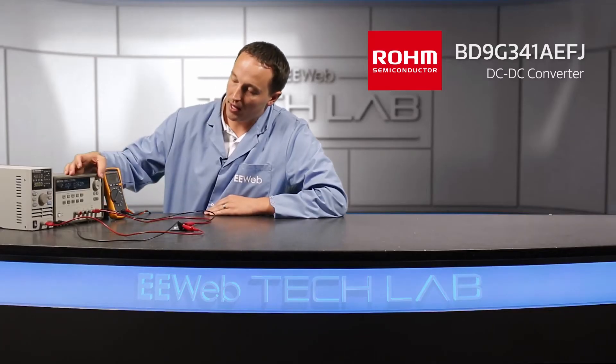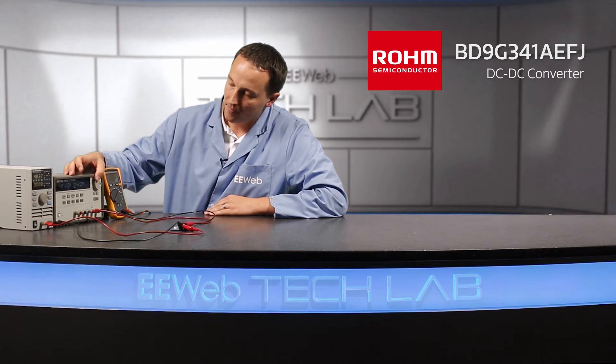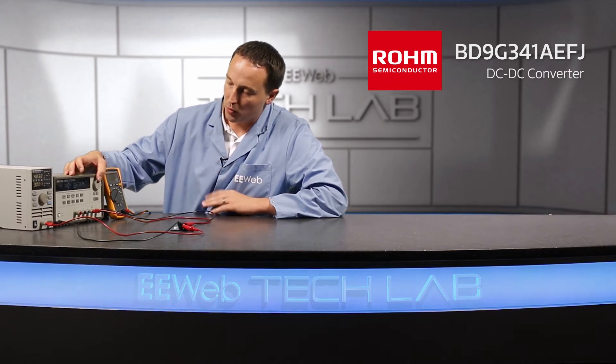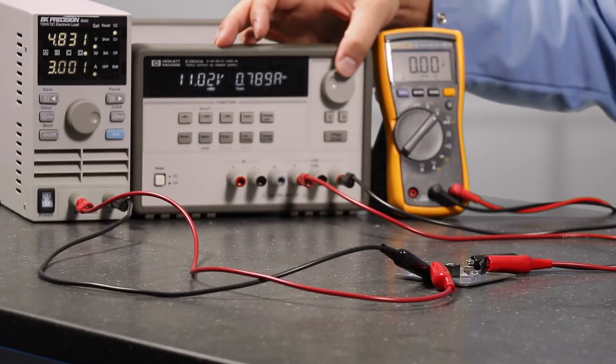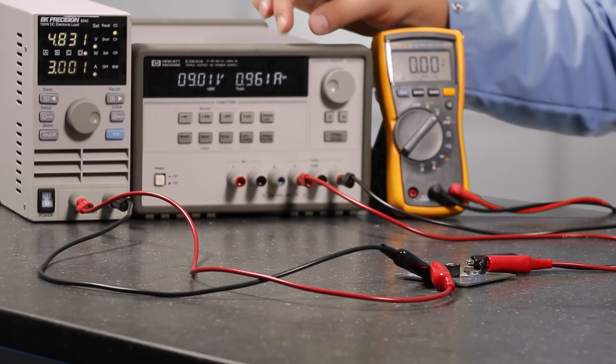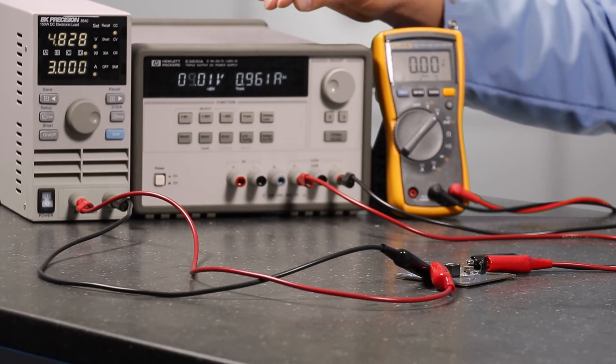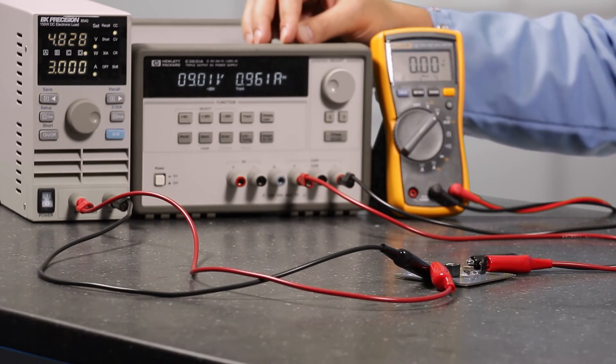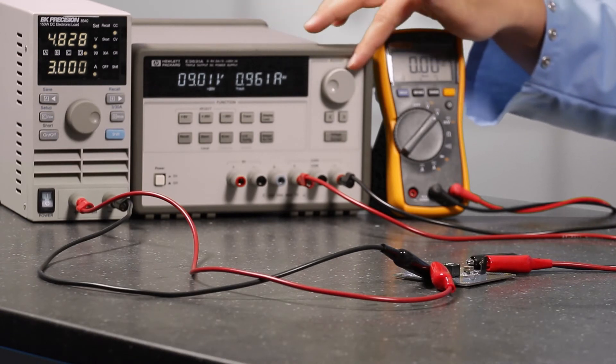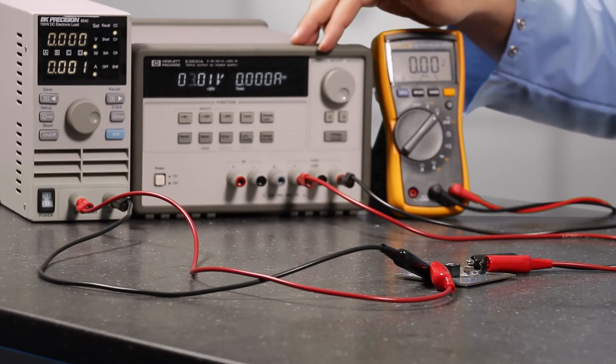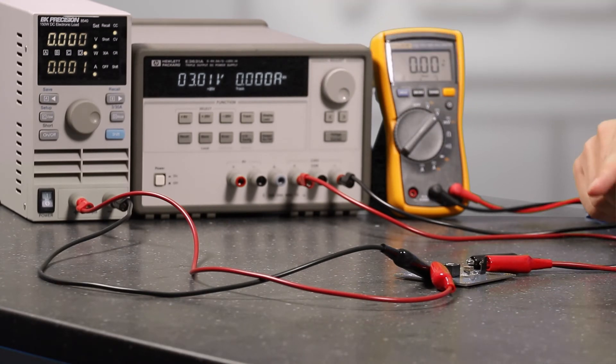Now if I ramp my supply voltage down, and remember it's twice what it shows on here, as we get down to say about 9 volts, if I step this down again it's going to hit the output limit of the actual supply. So it'll start switching between constant current and constant voltage modes. But if I ramp down far enough you'll see that this has gone into under voltage lockout.